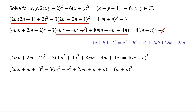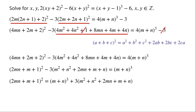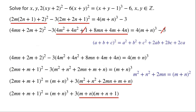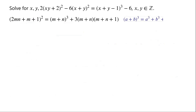Rearranging the equation, we have: (2mn plus m plus 1), all squared, equals (m plus n), all cubed, plus 3 times (m squared plus n squared plus 2mn plus m plus n). As m squared plus n squared plus 2mn equals (m plus n), all squared, so m squared plus n squared plus 2mn plus m plus n equals (m plus n) times (m plus n plus 1). We also know that (a plus b), all cubed, equals a cubed plus b cubed plus 3ab times (a plus b).